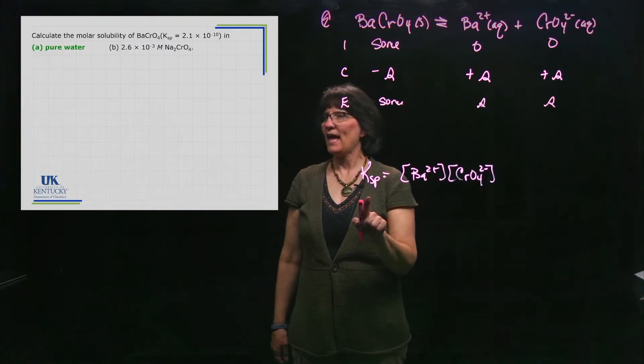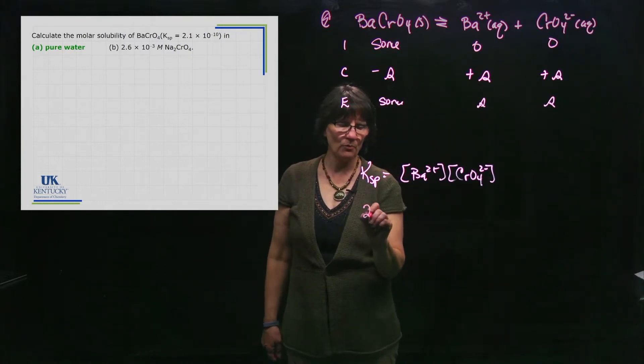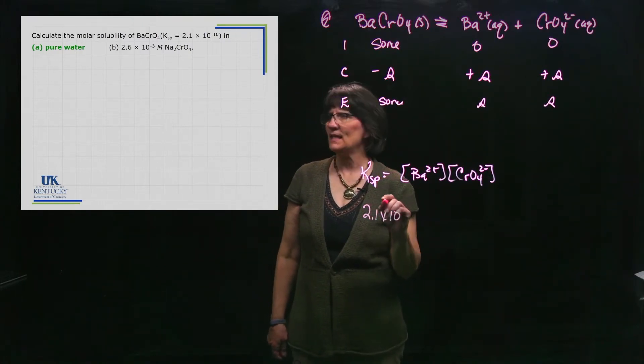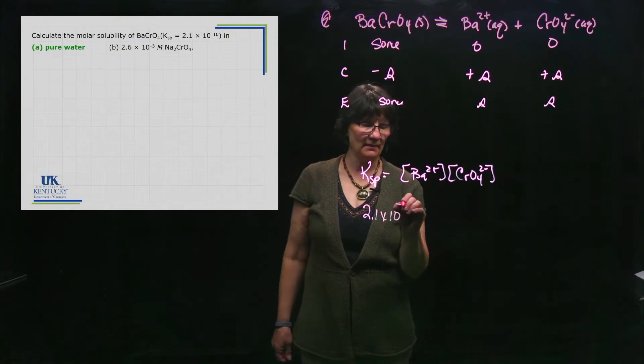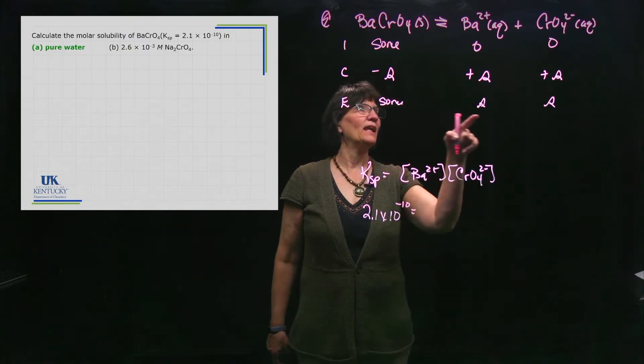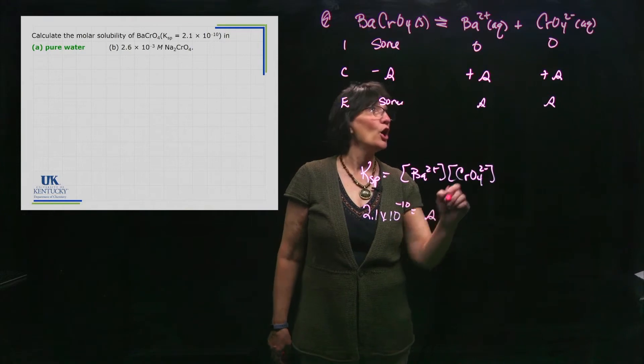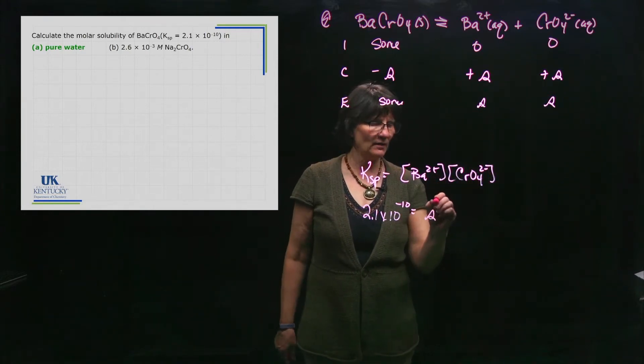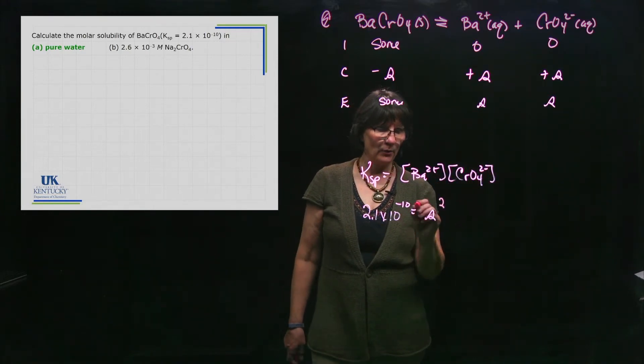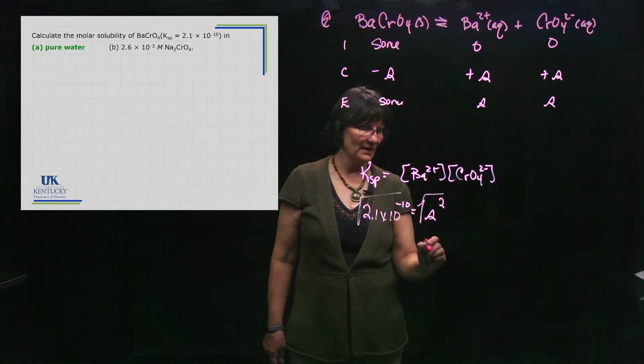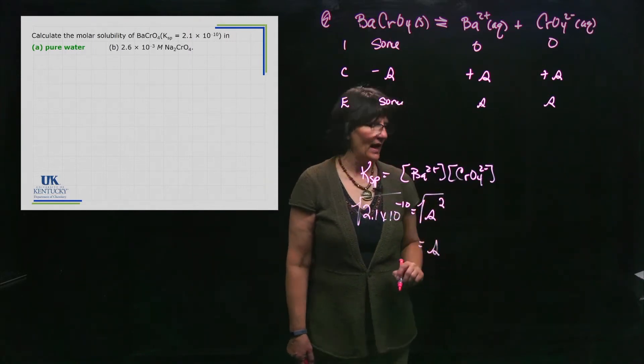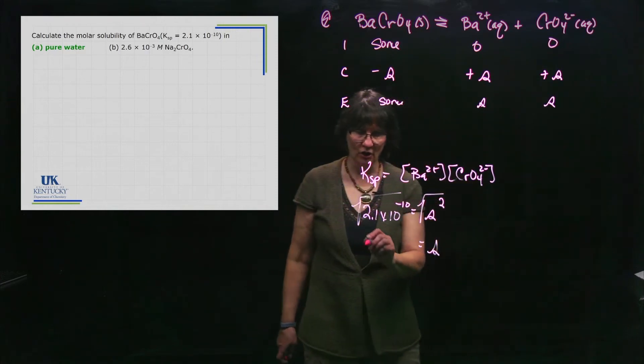So the Ksp, which is given to me as 2.1 times 10 to the minus 10, equals what's the E line for barium? It's S. What's the E line for chromate? It's also S. So if I were to take the square root of 2.1 times 10 to the minus 10, I would have the solubility of this salt: 1.4 times 10 to the minus 5.